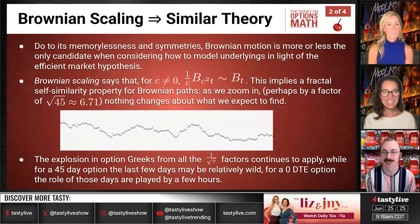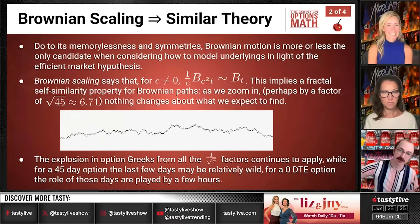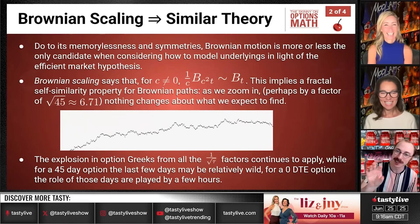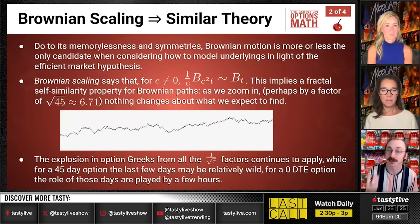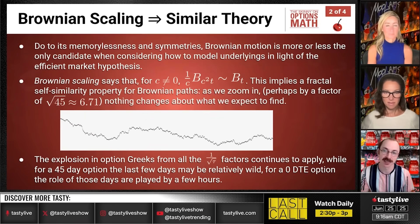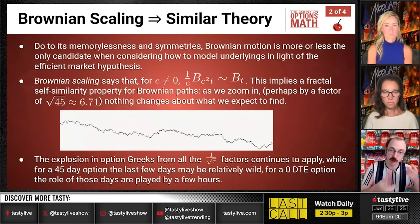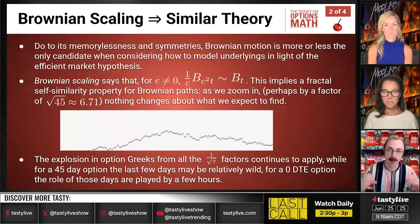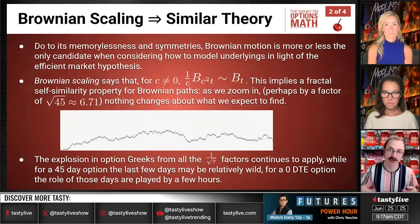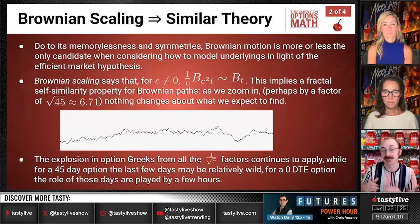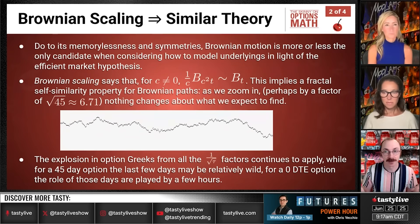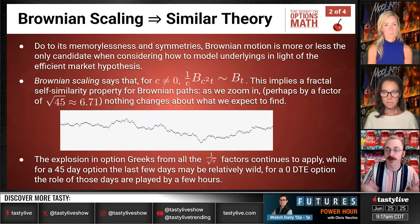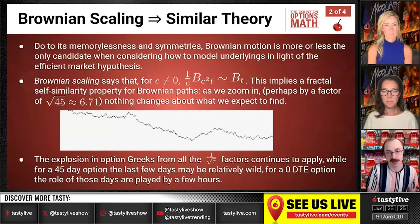Brownian scaling. Here we've got a picture — a simulated Brownian curve, and it's a GIF so at some point it loops. The point is that as we zoom in, it doesn't really look any different. This is called Brownian scaling: if you shrink a Brownian motion by a factor C — say a thousand — making all motions smaller, but speed it up by C squared — a factor of a million — there's no change. It has the exact same distribution as the initial Brownian motion. The probabilities of it doing any particular thing are identical.